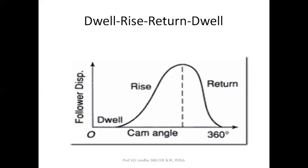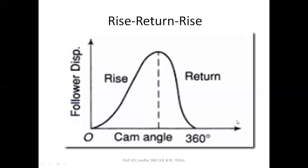The second type is DRRD — dwell, rise, return, dwell. Here the FOLLOWER starts at the dwell position, rises as the CAM rotates, and then suddenly drops back with no dwell at the top, returning directly to its original position and then dwelling again. The third type is RRR — rise, return, rise CAM. Here there is no dwell at all; the FOLLOWER rises, then follows a return path, and then rises again.